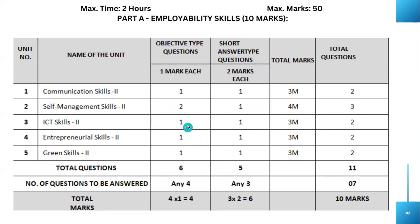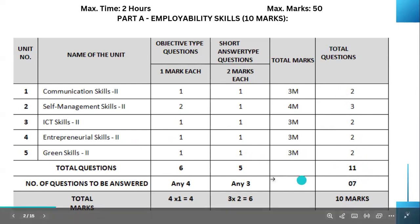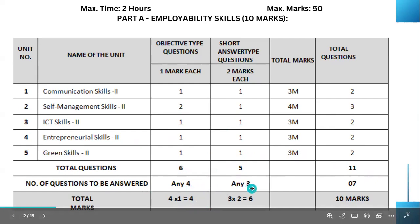ICT Skills: you will get 1 mark from the objective type questions and 3 from short answer type questions. Total questions to answer are 7, and each question carries 1 mark for objective type and 2 marks each for short answer type questions.